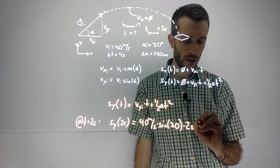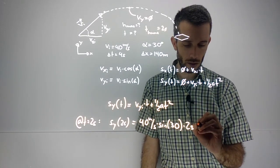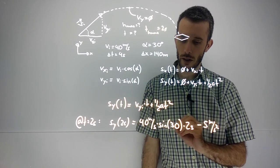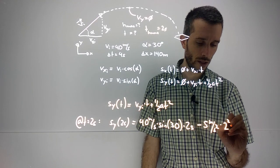plus one half times 9.8—we're going to be lazy again, use 10—so minus 5 meters per second squared times 2 squared seconds squared.